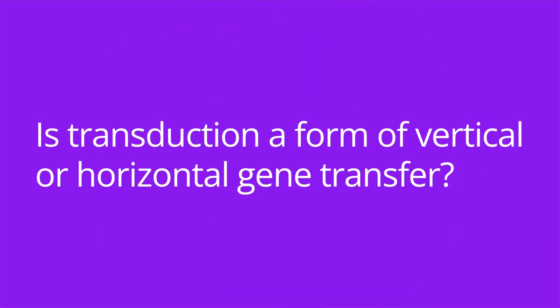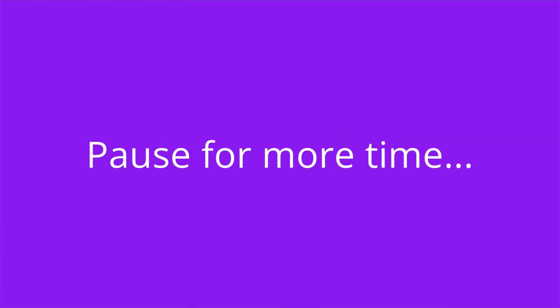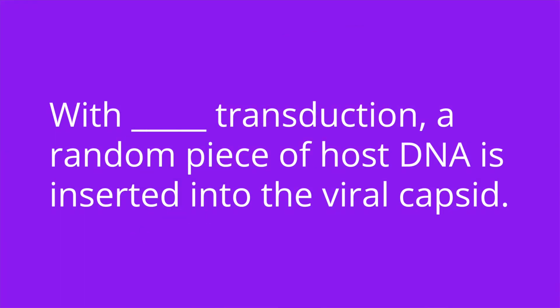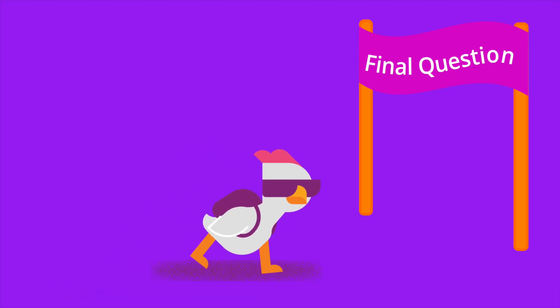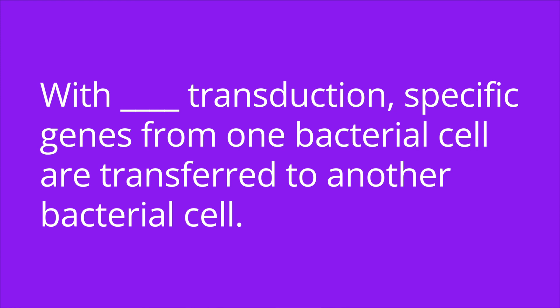It's quiz time. I have three quick questions to test your knowledge. Question number one: is transduction a form of vertical or horizontal gene transfer? The answer is horizontal. Number two: with blank transduction, a random piece of host DNA is inserted into the viral capsid. The answer is generalized. And number three: with blank transduction, specific genes from one bacterial cell are transferred to another bacterial cell. The answer is specialized.